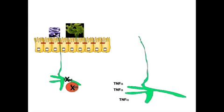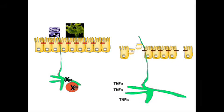When T-bet is missing from a colonic dendritic cell, the dendritic cell makes a lot of tumor necrosis factor alpha, or TNF-alpha. This results in epithelial cell death, and holes form. The barrier is now broken.